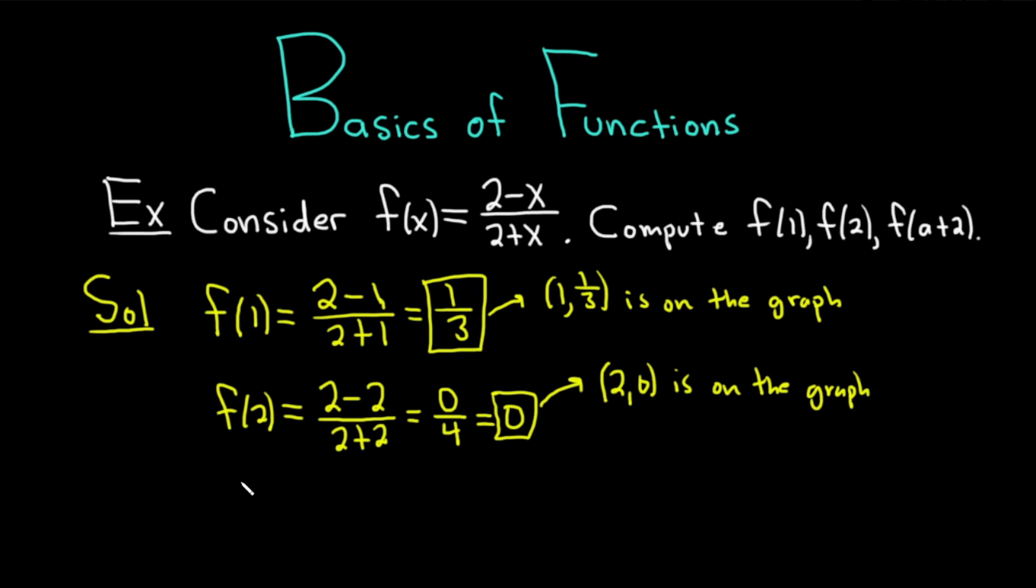The last one is f of a plus 2. Here's where sometimes people will get confused because it's not just a number. It's a plus 2. That's your x. Your x is a plus 2. So instead of x, you have a plus 2. So it's 2 minus parentheses a plus 2. Notice the parentheses are there. Very important because we're subtracting and we're going to have to distribute a negative 1. On the bottom, it's 2 plus parentheses a plus 2.